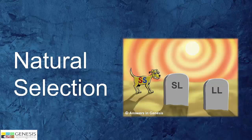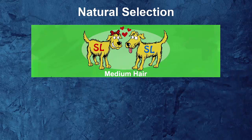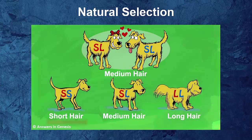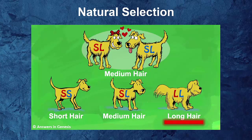Let's talk about natural selection. These two dogs both have medium hair. They have the genetic information for short hair or long hair, which means when they have puppies, there are three possible outcomes: puppies with short hair, with medium hair, or with long hair. Now let's say these puppies grow up and decide to move to the desert. What's going to happen?